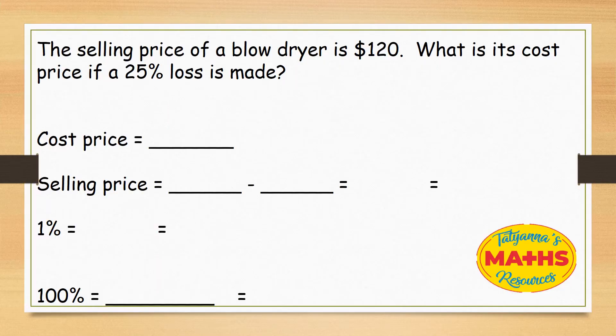Our first example reads: the selling price of a blow dryer is $120. What is its cost price if a 20% loss is made?